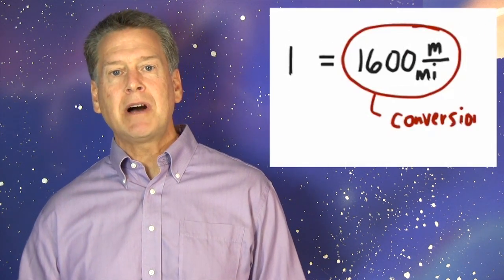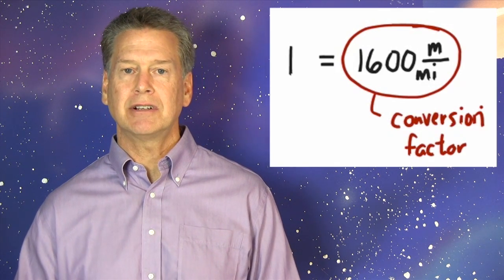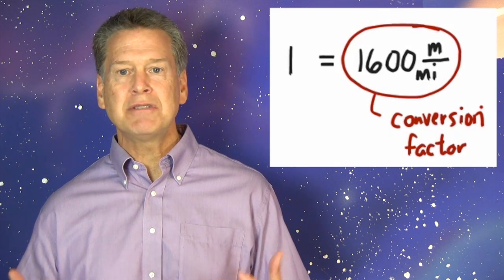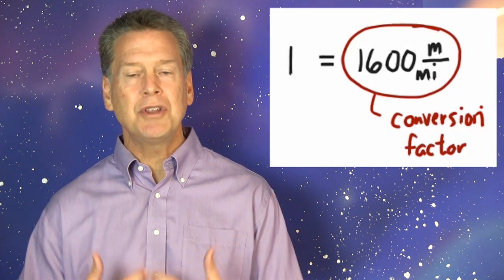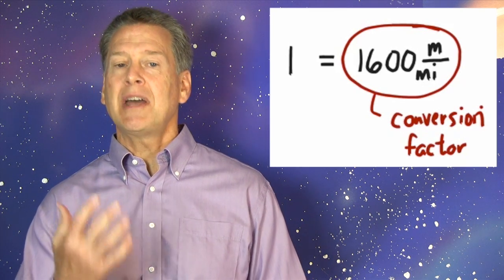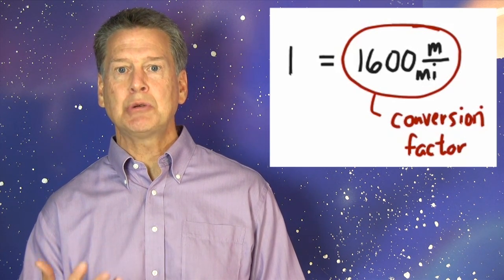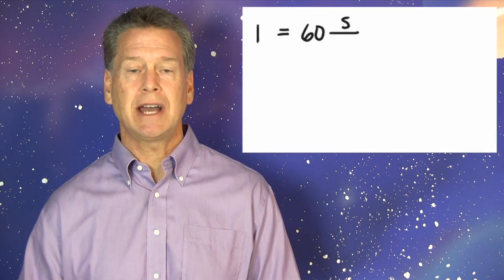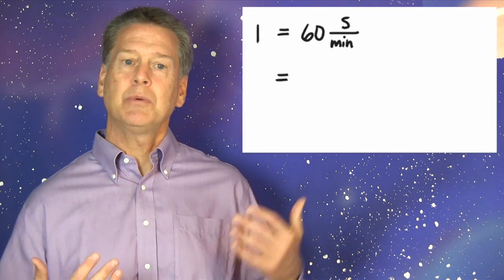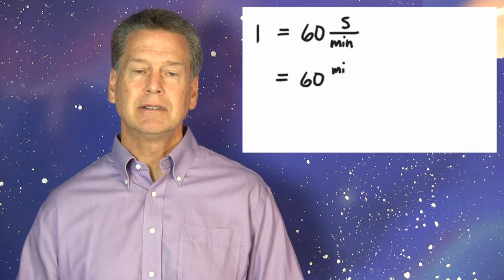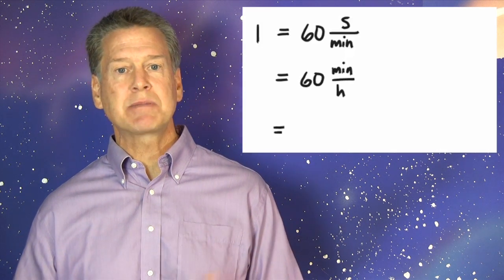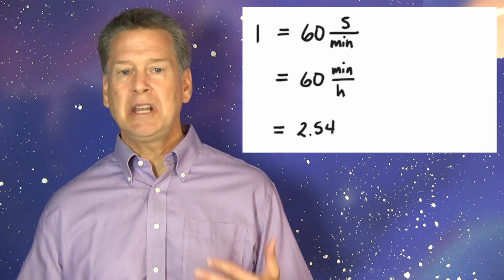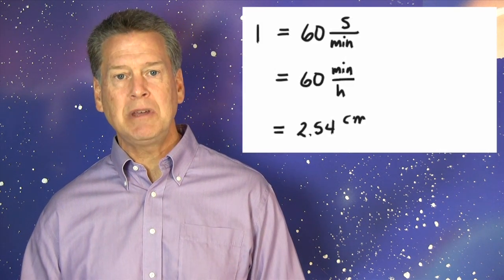1,600 meters per mile is called a conversion factor. All conversion factors are like this, they equal the number 1, but that 1 is expressed as a ratio of units. Here are some other commonly known conversion factors: 1 equals 60 seconds per minute, 1 equals 60 minutes per hour, 1 equals 2.54 centimeters per inch.